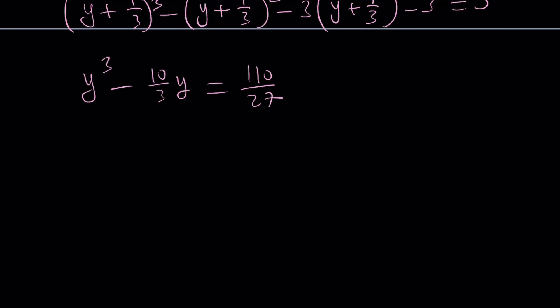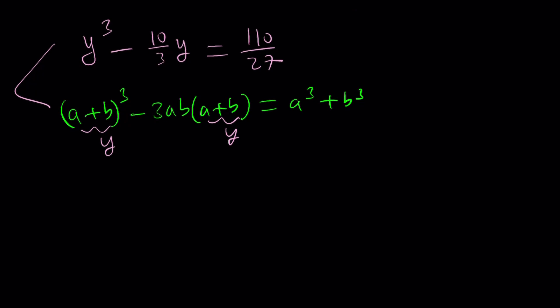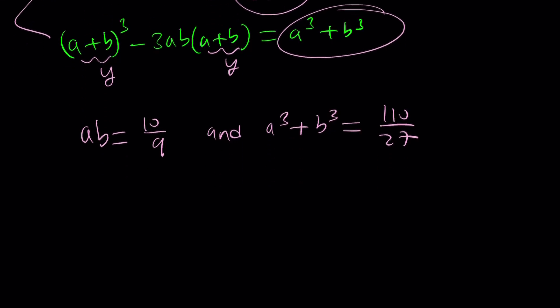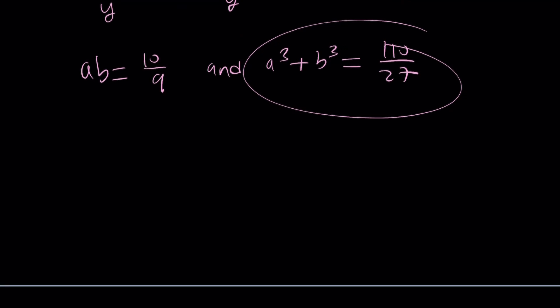And to be able to recognize what the formula looks like, we're going to take a look at an identity. a plus b cubed, if you subtract 3ab times a plus b, this gives you sum of two cubes. And by setting the a plus b equal to y and comparing these two equations, we're able to get a system of equations. So, if you look at the coefficient of y in both equations, one of them is negative 10 over 3 and the other one is negative 3ab. So, from here, we get ab equals 10 ninths. And from the constant terms, we get a cubed plus b cubed is equal to 110 over 27.